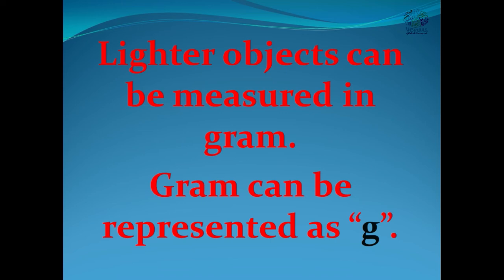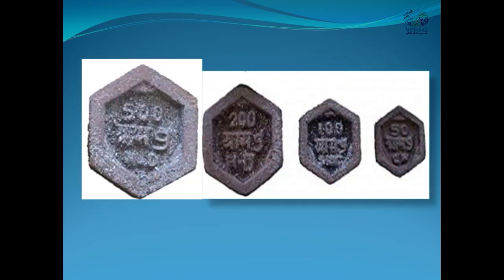Gram can be represented as G. Only lighter objects should be measured using gram. These are gram stone weights that you may have seen in professional stores: 50 grams, 100 grams, 200 grams, 500 grams. These gram stone weights are used to measure the weight of objects accurately.